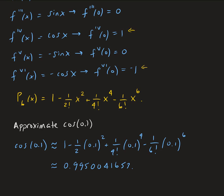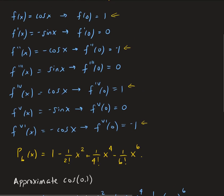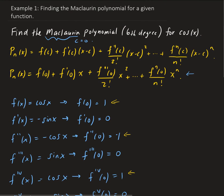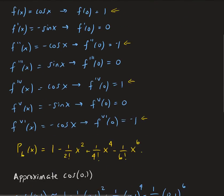If we calculate cosine 0.1 directly, we get the same value for this many decimal places — it's a pretty good approximation. So that's how the Taylor approximation works. In this case, we're using a Maclaurin polynomial because we're expanding around c equals zero.